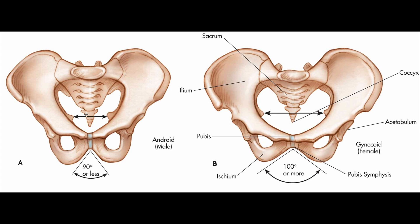The second point to remember is that the pelvic inlet is transversely oval in the female, but heart-shaped in the male, because of the indentation produced by the promontory of the sacrum in males.